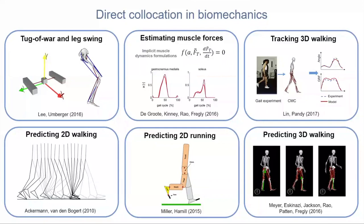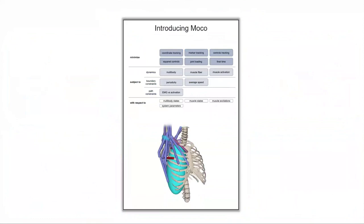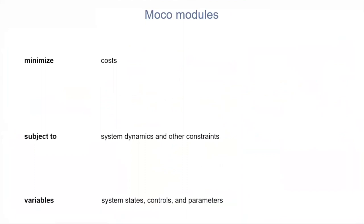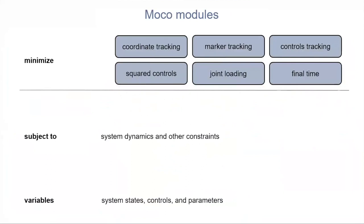Now that you know what direct collocation is, I'll pass it back to Chris to show what you can do with MoCo. MoCo is modular — an optimal control problem has costs to minimize, constraints to enforce, and variables to solve for. In MoCo, users assemble these parts with pre-existing modules. MoCo contains cost modules for tracking coordinates or joint angles, tracking markers, tracking control signals like excitations, minimizing control signals, minimizing joint loading, and minimizing the duration of the motion. This is just a subset of available cost modules, and more are planned. All modules are customizable — for example, you can choose which markers to track and set different weights for each.